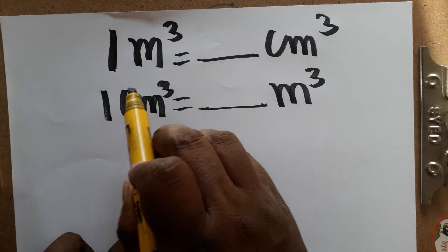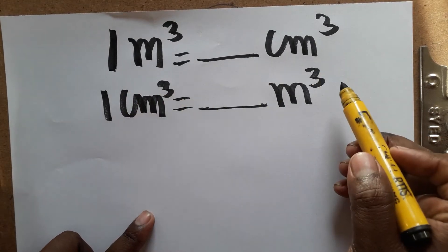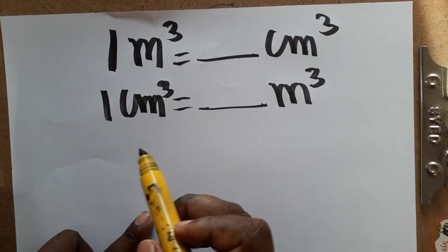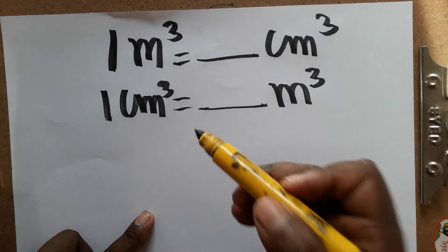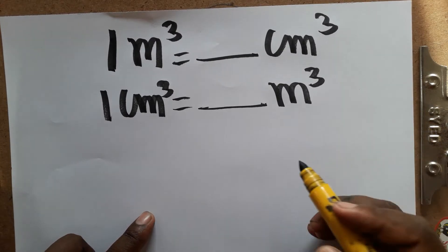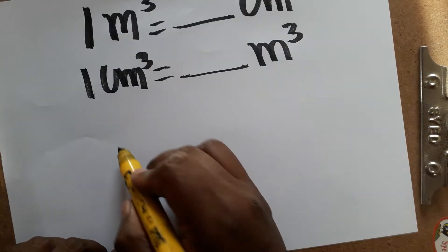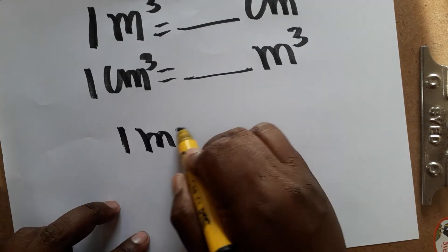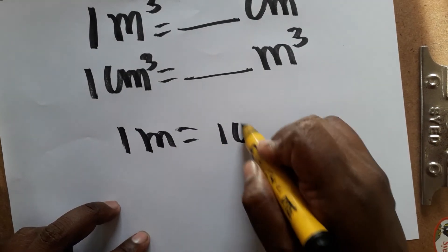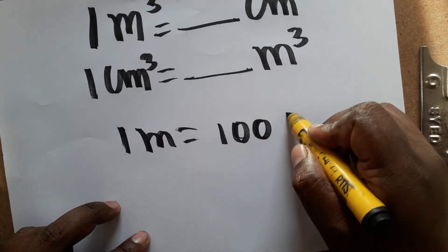Today we are going to learn: one meter cube is equal to dash centimeter cube, and one centimeter cube is equal to dash meter cube. First, we establish that one meter is equal to hundred centimeters.